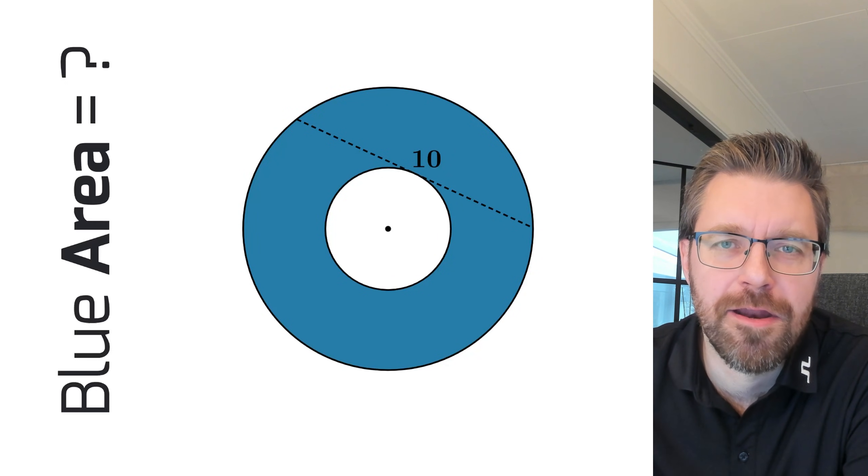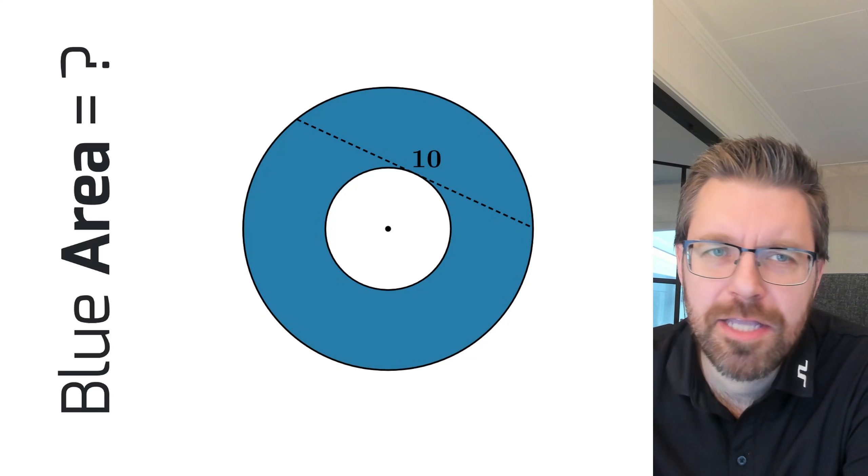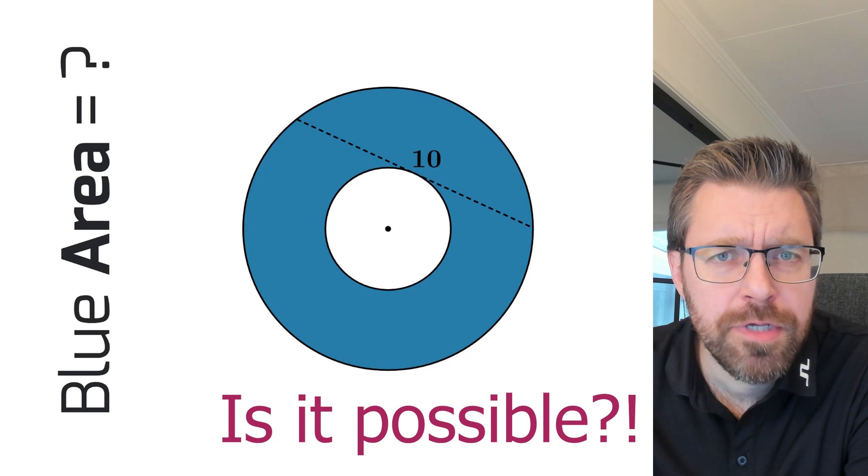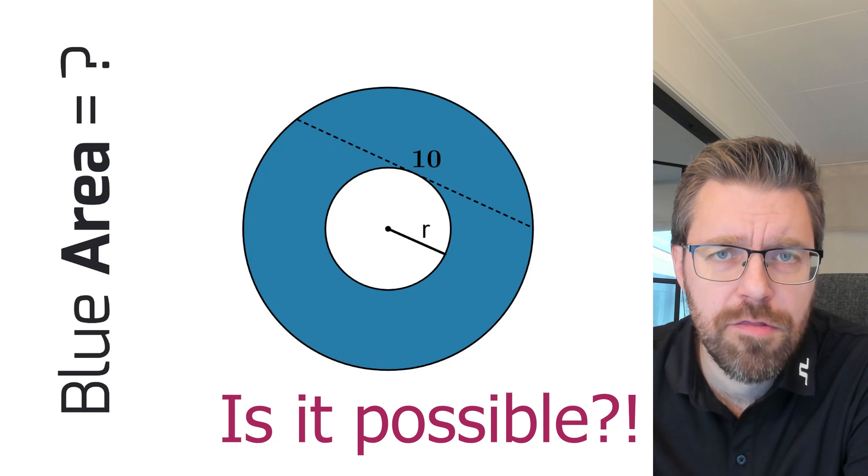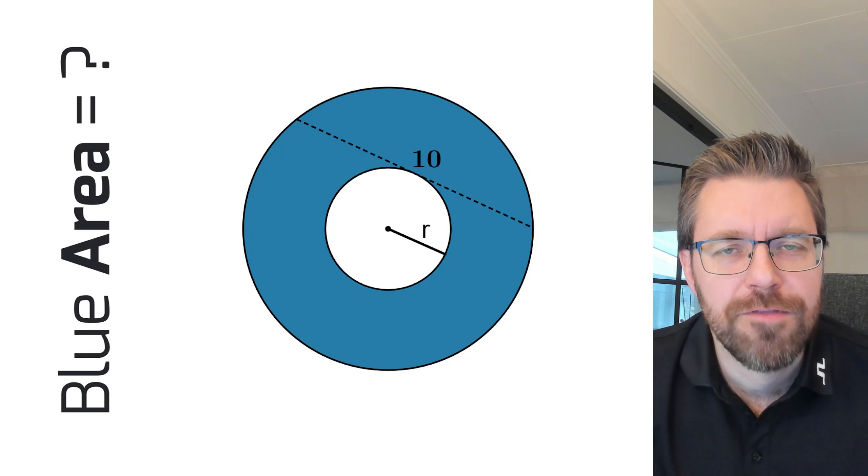This is a funny little problem. We need to calculate the blue area in the picture. But can we do it without knowing the radius of the inner circle? The only thing we know is the length of the dashed line.